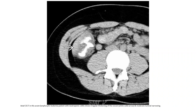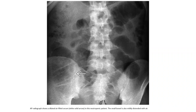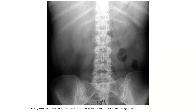Contrast-enhanced CT in an acute lymphocytic leukemia patient with neutropenic colitis, showing irregular thickening of the cecum and moderate luminal narrowing. AP radiograph shows a dilated air-filled cecum. In this neutropenic patient, the small bowel is also mildly distended with air. AP radiograph in a patient with a history of leukemia and new abdominal pain shows a lack of bowel gas within the right abdomen.